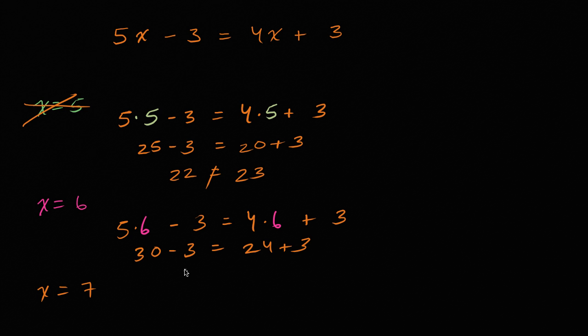Minus three needs to be equal to four times six is twenty-four, and then plus three. Well, this is true. Thirty minus three is twenty-seven, which is indeed equal to twenty-four plus three. It's equal to twenty-seven. So x equals six does satisfy our equation. It is a solution. And actually, as you will see in the future, x equals six is the solution to this equation.